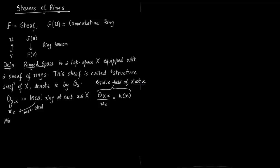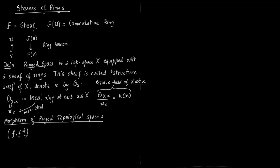Now we talk about morphisms of ringed spaces. We have two spaces X and Y, both with structure sheaves. Space X has structure sheaf O of X, and space Y has structure sheaf O of Y. The first map F is just a continuous map between the two topological spaces from X to Y.